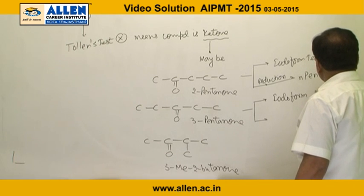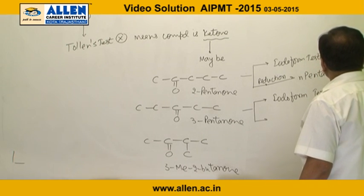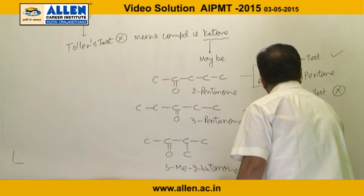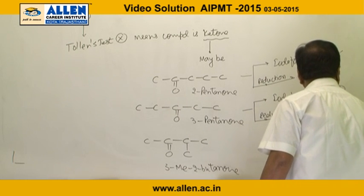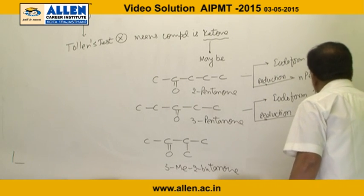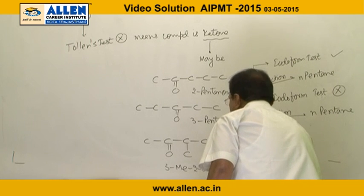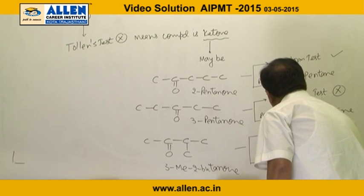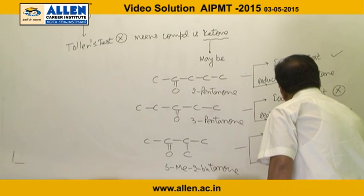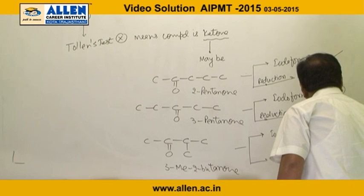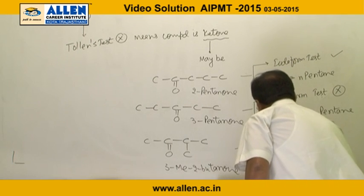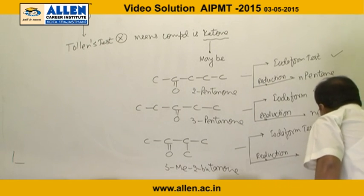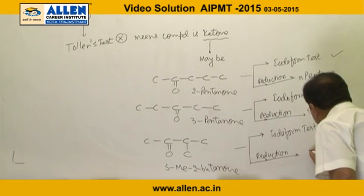3-pentanone does not show the iodoform test, but on reduction it forms n-pentanol. 3-methyl-2-butanone shows the iodoform test but on reduction gives isopentanol, not n-pentanol.